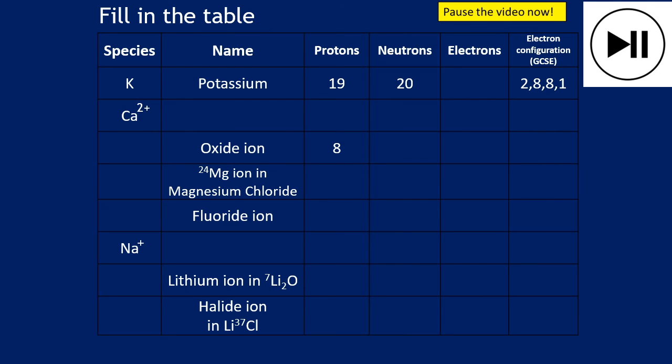Okay I'm going to suggest you pause the video now and you work your way through this table in terms of identifying the species or naming the species, identify the number of protons, neutrons, electrons, and as kind of an extra bonus I've got GCSE electron configuration. And I'm calling that GCSE because actually once we get to A-level we are going to upgrade that a little bit. But just to kind of practice this, so pause the video, complete this table and when you're ready unpause the video and you'll see the answers.